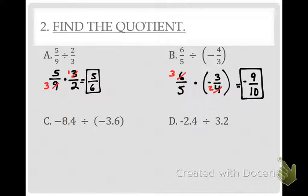Going on to the next one. Here's what we have — two negative signs. Is that an even or odd number? Even. So is my answer going to be positive or negative? It's going to be positive, because two negatives equal a positive quotient.